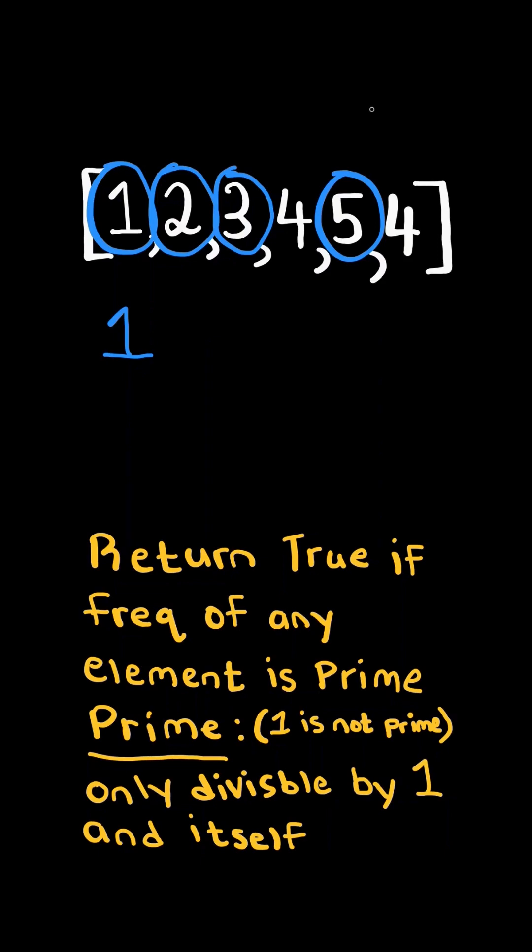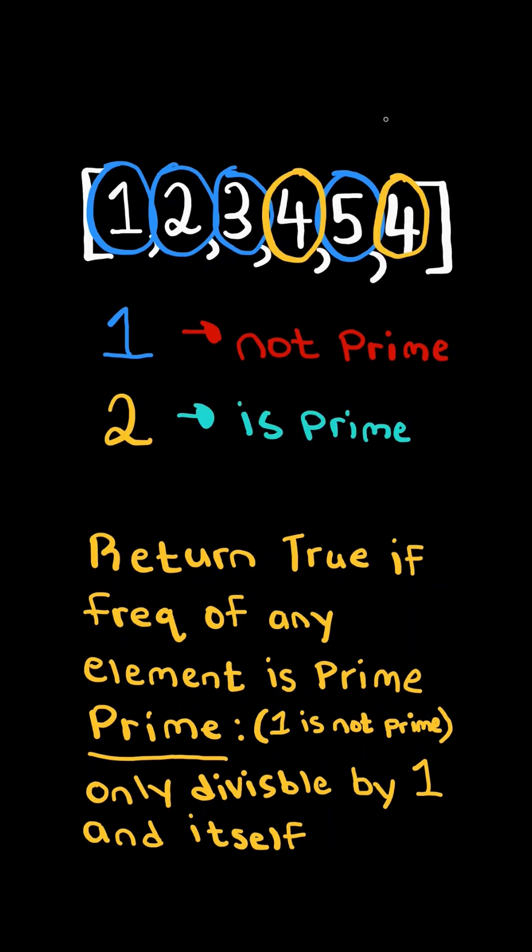In this case, 1, 2, 3, and 5 all have frequency 1, but 1 is not a prime number. On the other hand, 4 has frequency 2, and 2 is a prime number. So in this case, we return true.